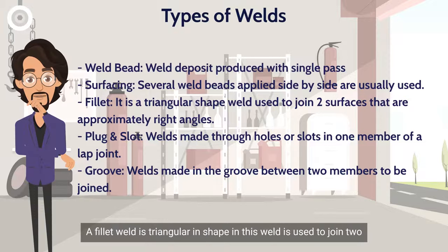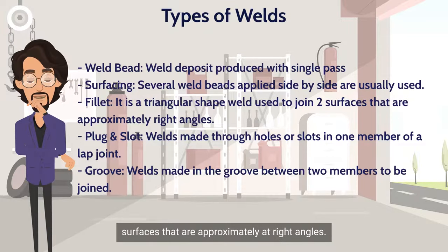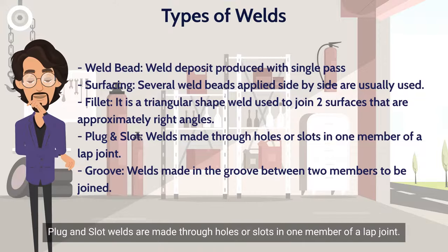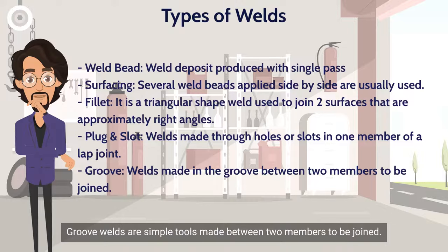A fillet weld is triangular in shape and is used to join two surfaces that are approximately at right angles. Plug and slot welds are made through holes or slots in one member of a lap joint. Groove welds are simple welds made between two members to be joined.